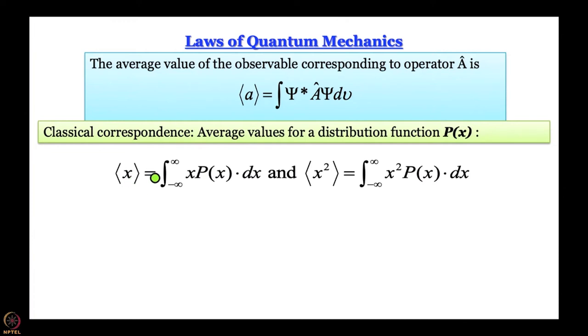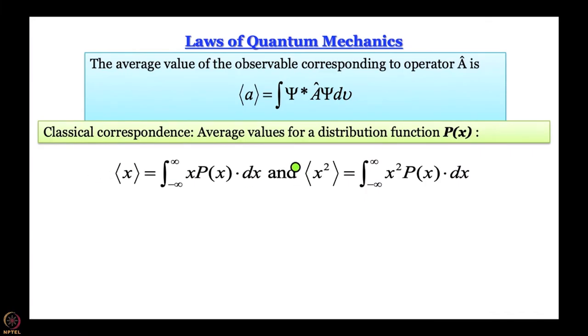The average value of variable x is given by ∫x·p(x)dx integrated over all space. For x² it is ∫x²·p(x)dx, and more generally for any function f it follows the same pattern. This was known from classical mechanics. According to Born's interpretation, p(x) in quantum mechanics is essentially the probability distribution, which is |ψ|². So the quantum mechanical analog follows naturally.